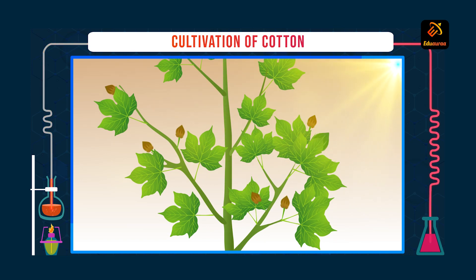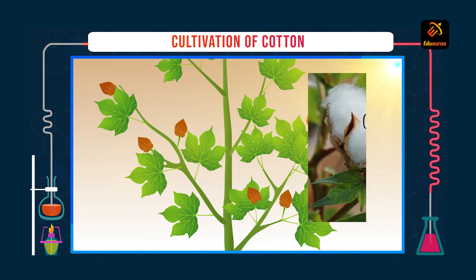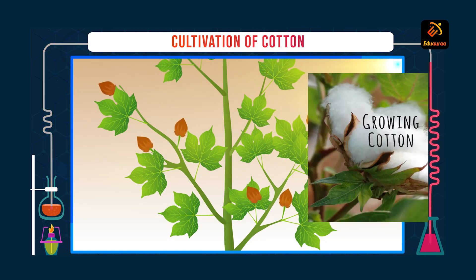The plants give whitish yellow flowers. In a few days, the flower turns reddish and then slowly grows into a spherical walnut-like structure which is known as cotton ball.